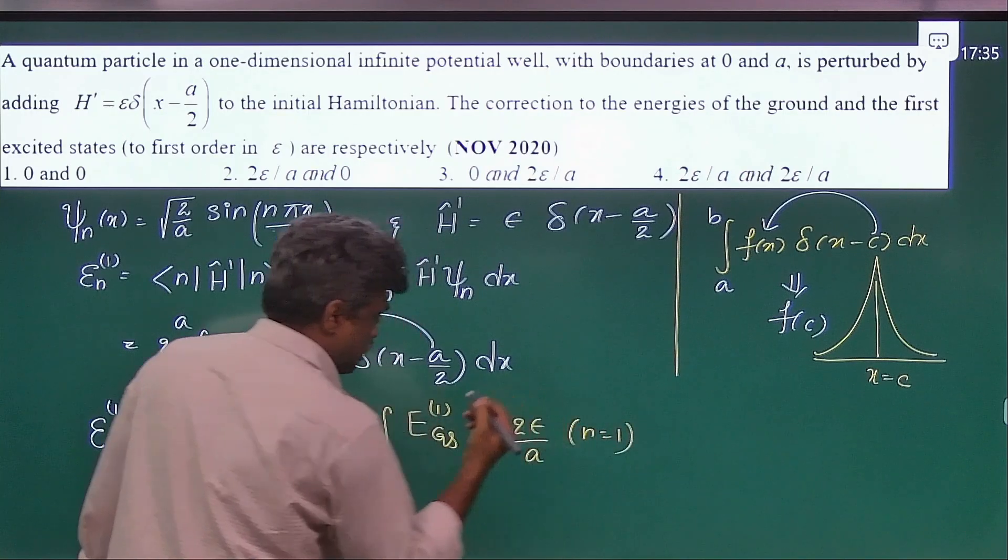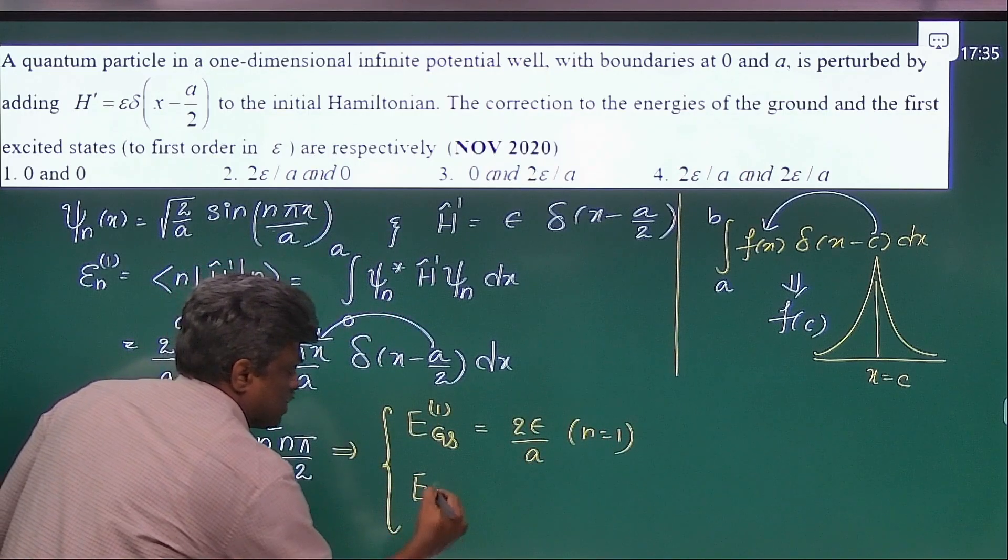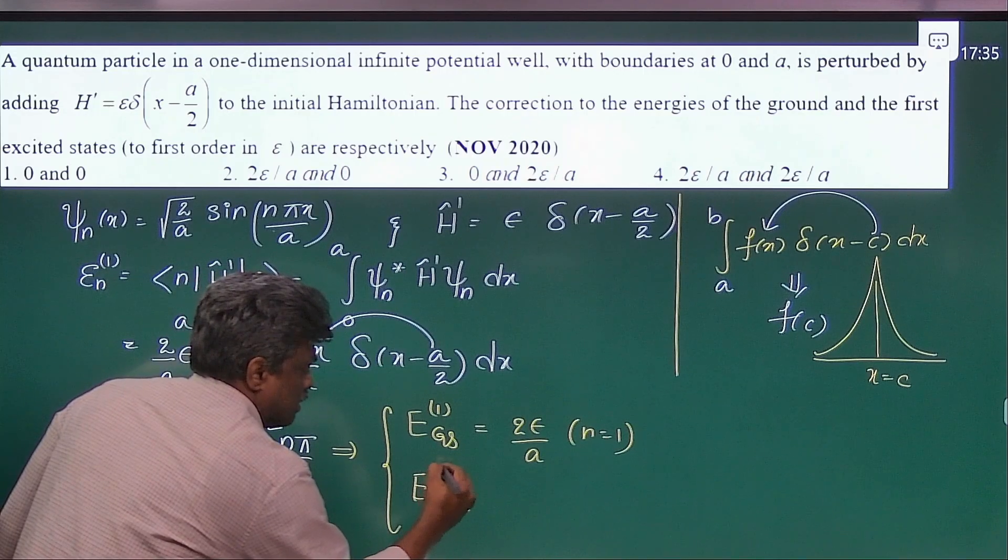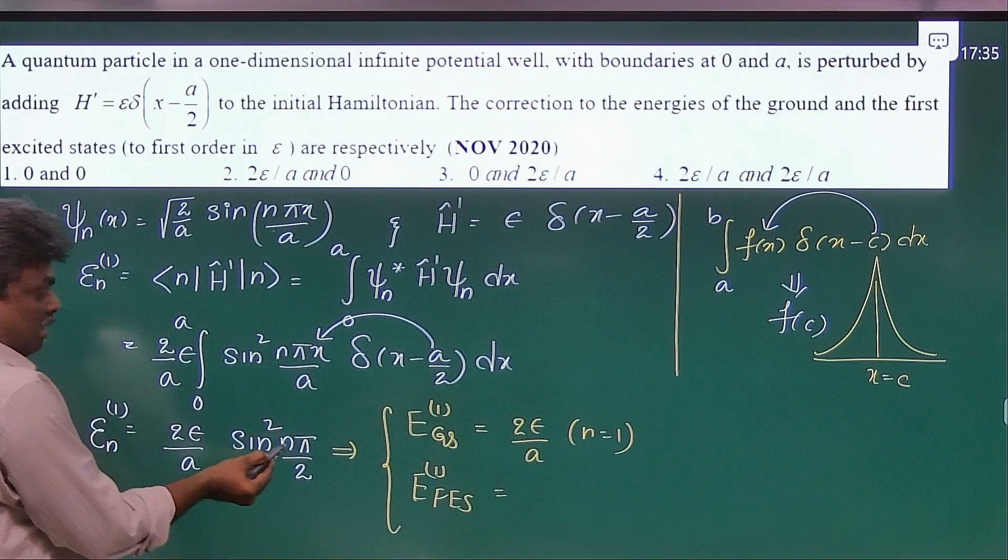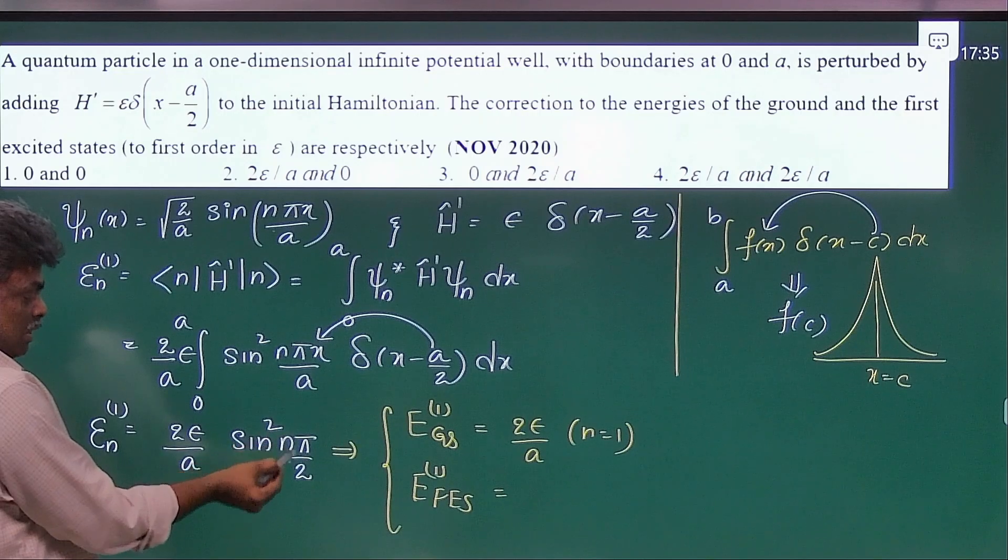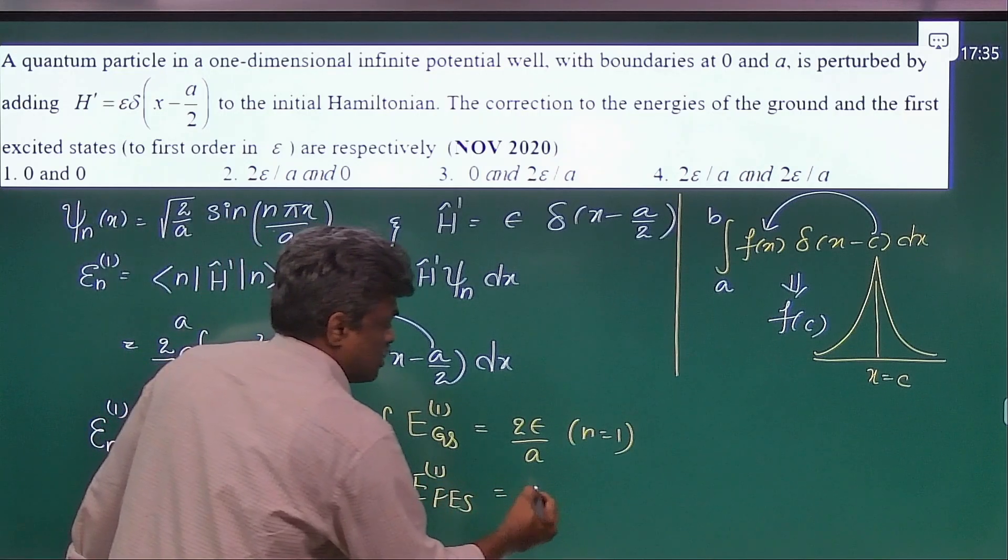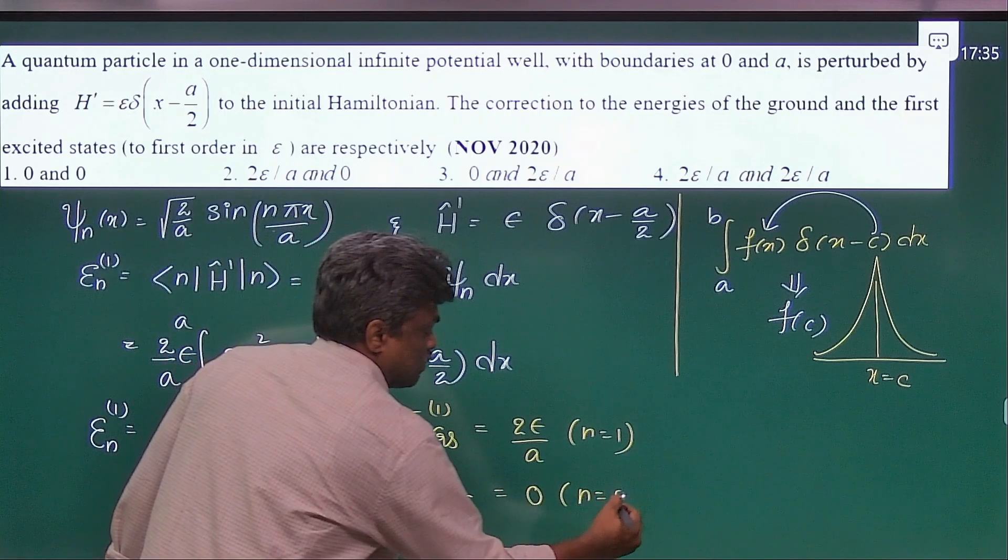And for the first excited state, the answer will be n is 2 here. That's why it will be 0, since n equal to 2.